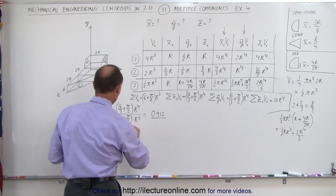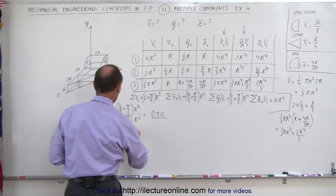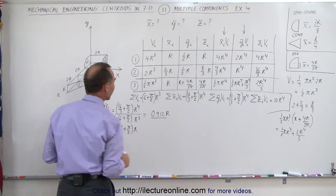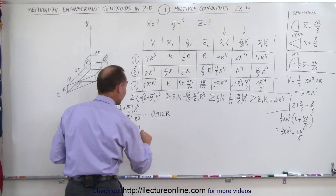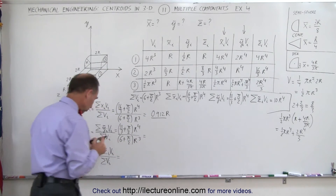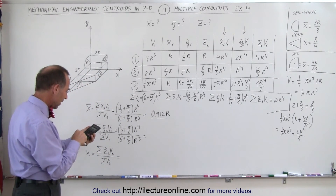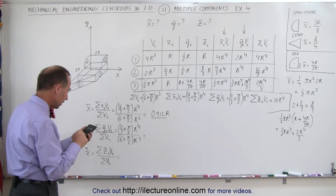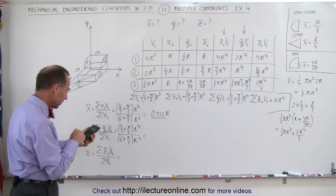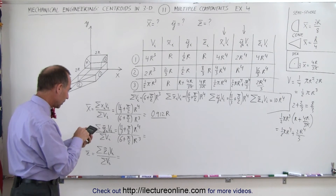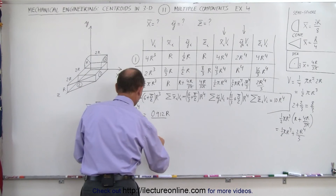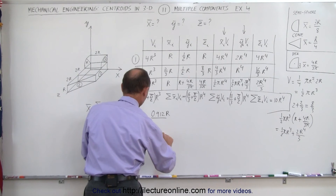For the y-coordinate: we take (11/3 + π/2)r⁴ divided by (6 + π/2)r³. Using the calculator: (π/2 + 11/3) ÷ (π/2 + 6) = 0.692, so ȳ = 0.692r.